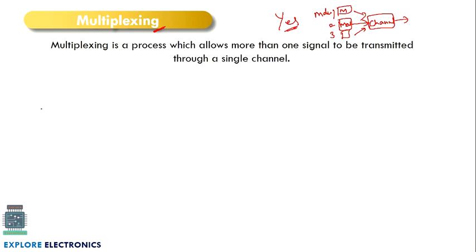Here is the scenario: suppose many persons — person one, person two, person three, person four, and person five — are in a group talking simultaneously. It becomes impossible to understand the communication between one another because mixing of signals is happening and it becomes noise. Similarly in communication, if we try to transmit more than one signal through the same channel, there will be mixing and it will be transmitted as noise. To avoid that, we adopt a process called multiplexing.